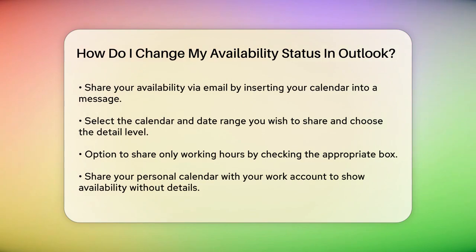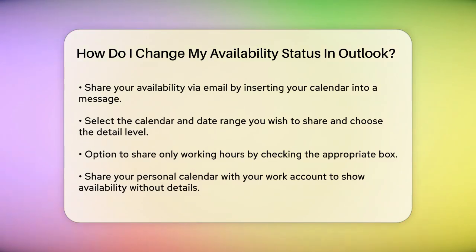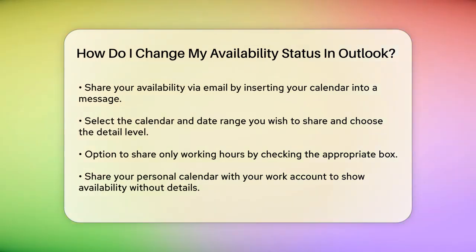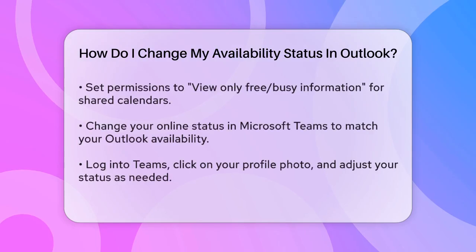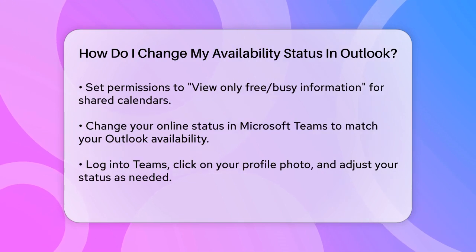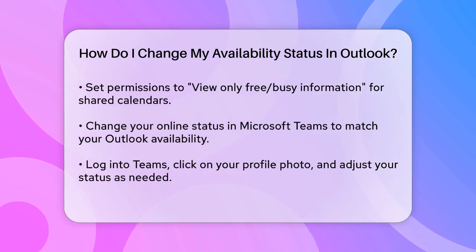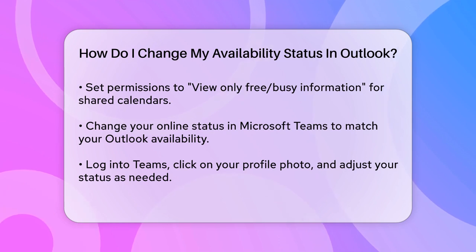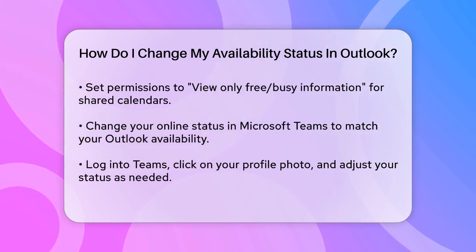Another way to manage your availability is by sharing your calendar directly. You can share your personal calendar with your work account, allowing others to see when you're free or busy without seeing the details of your personal events. To do this, open your personal Outlook calendar, select the option to Share Calendar, and enter your business email address. Set the permissions to view only free or busy information so others can see your availability without the details.